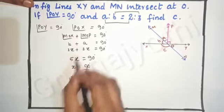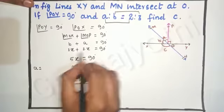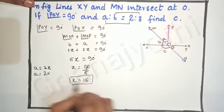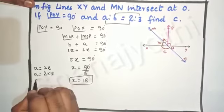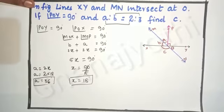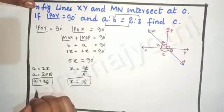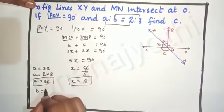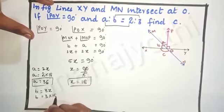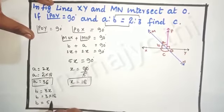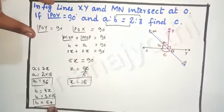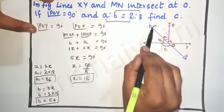Now we find the value of a and b. a equals 2x, so a equals 2 into 18, which is 36 degrees. Therefore the value of a is 36 degrees. And b equals 3x, so b equals 3 into 18, which is 54 degrees. Therefore the value of b is 54 degrees.